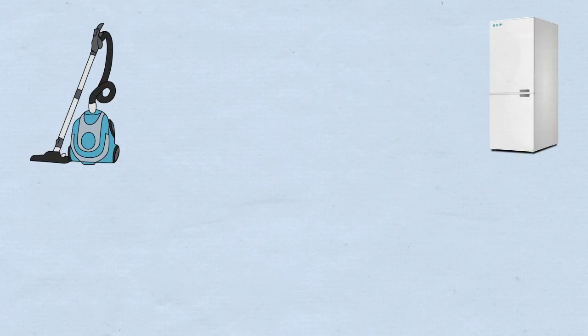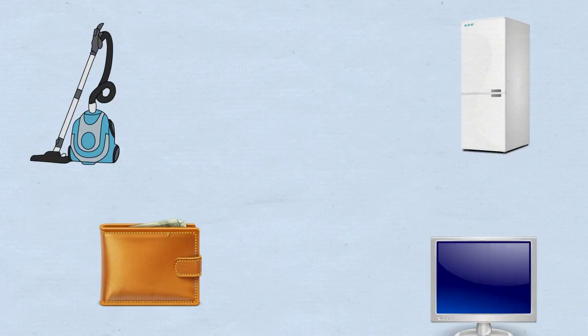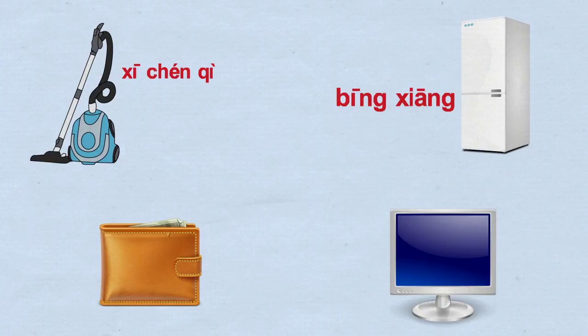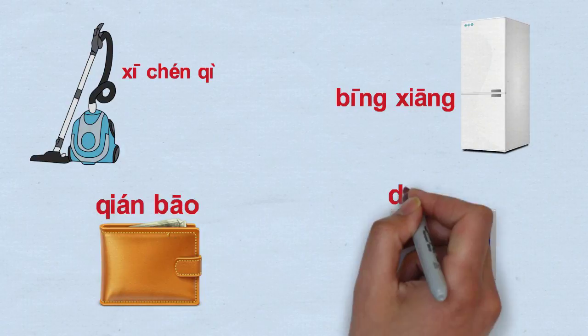Let's have a look at some common household objects to start with and see how the Chinese literally call them. How about a suck dust machine, an ice box, a money bag, or an electric brain?